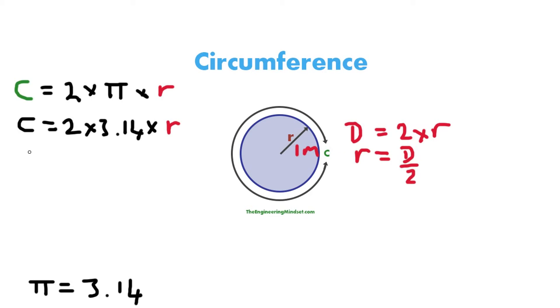Okay, so back to this one. The circumference then equals 2 times 3.14 times 1 meter. So circumference equals 2 times 3.14 is 6.28 times 1 meter. And 6.28 times 1 is obviously 6.28 meters.